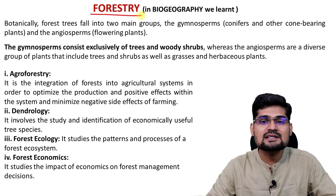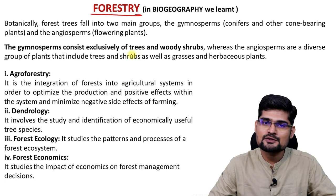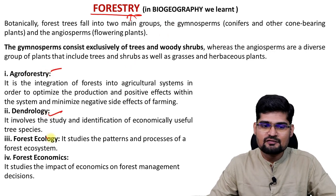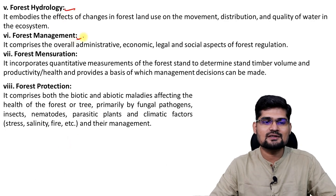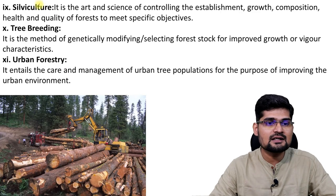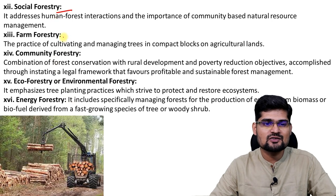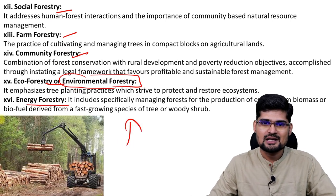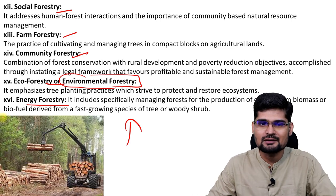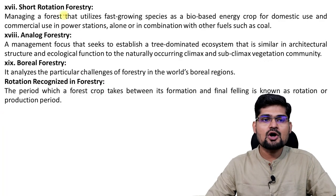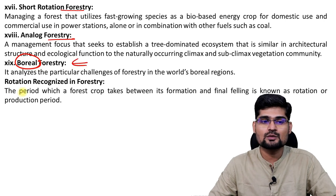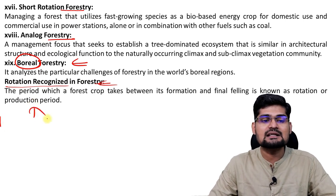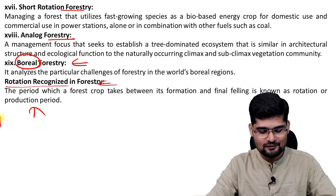The next activity is forestry, about which we have also learned in biogeography. Types of forestry include agroforestry, dendrology, forest ecology, forest economics, forest hydrology, forest management, forest mensuration, forest protection, silviculture, tree breeding, urban forestry, social forestry, farm forestry, community forestry, eco forestry or environmental forestry, energy forestry, short rotation forestry, analog forestry, and boreal forestry. Almost 19 to 20 varieties of forestry are available across the world, and it is essentially a primary activity.